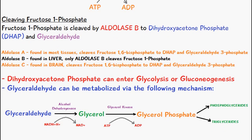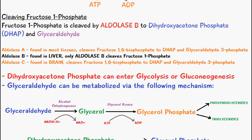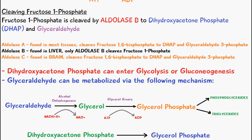Dihydroxyacetone phosphate then enters glycolysis or can also enter gluconeogenesis, and the glyceraldehyde which is formed can be metabolized by the following mechanisms.